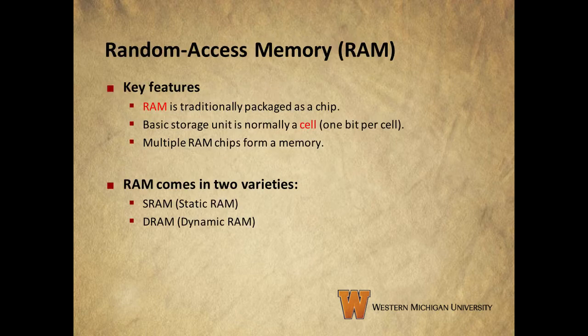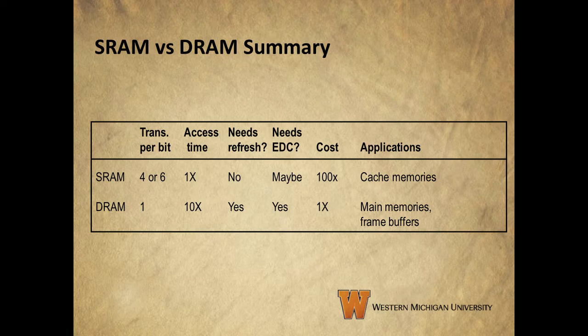Let's start with random access memory or RAM. RAM traditionally comes as a chip. The basic storage unit is called a cell and stores one bit per cell. Multiple RAM chips form a memory. It comes in two varieties: static RAM or SRAM and dynamic RAM or DRAM. This table shows some comparisons between SRAM and DRAM.